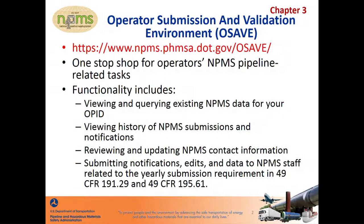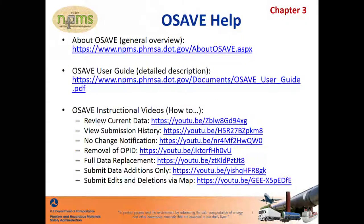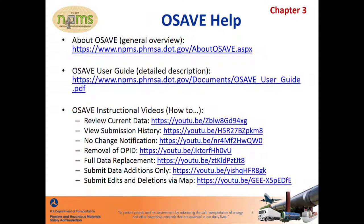There are several places you can go for help with OSAVE. The About OSAVE webpage, accessible from the pipeline operator page on the NPMS website, contains a general overview of the environment. The OSAVE user guide contains a detailed description of the tools and workflows, including a list of the questions you'll be prompted to address in the notification and submission paths. There's also a series of topic-specific instructional videos to show you an example of what usage of the environment looks like. The user guide and the instructional videos are accessible from the About OSAVE page and from the Help menu within OSAVE itself.